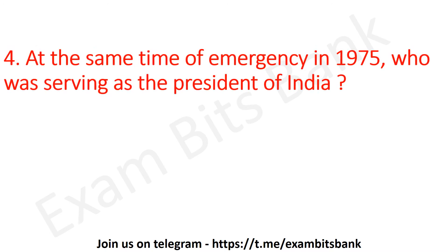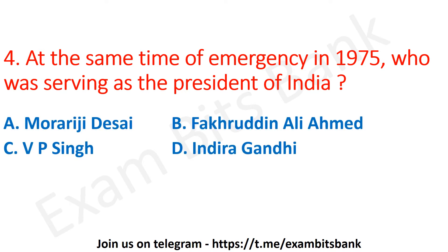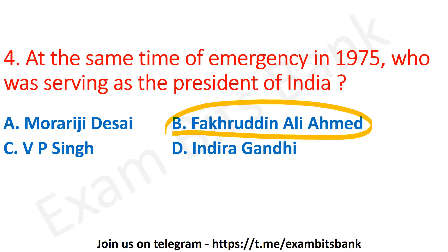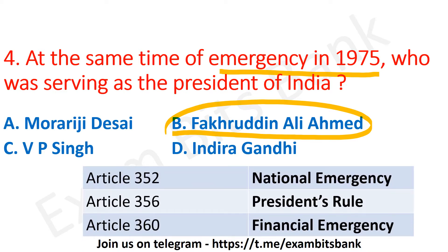At the time of the emergency in 1975, who was serving as the President of India? The options are Morarji Desai, Fakruddin Ali Ahmad, VP Singh, or Indira Gandhi. The correct answer is option B — Fakruddin Ali Ahmad. There are three types of emergencies: Article 352 deals with National Emergency, Article 356 deals with President's Rule, and Article 360 deals with Financial Emergency.